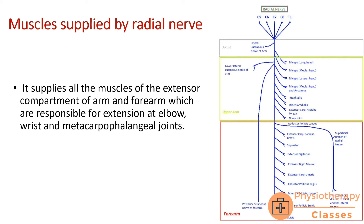However, interphalangeal joint extension is also maintained by the lumbricals and interossei muscles, which are not supplied by the radial nerve. So extension of the interphalangeal joints will not be affected by a lesion of the radial nerve. The radial nerve lesion is going to affect only the extension of the elbow joint, wrist joint, and metacarpophalangeal joint, depending upon the site of the lesion.